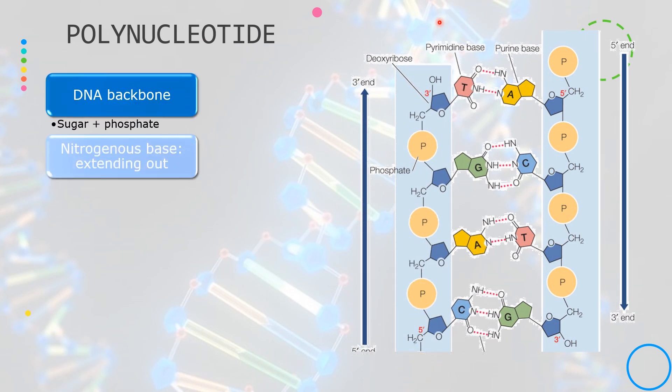The backbone of the DNA is made up of sugar and phosphate. Here is the sugar and here is the phosphate. This sugar phosphate backbone forms the structural framework of nucleic acids. This backbone is composed of alternating sugar and phosphate groups and defines the directionality of the molecule.